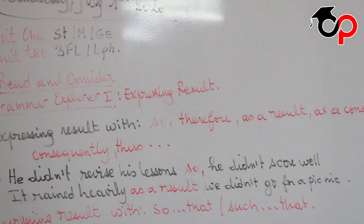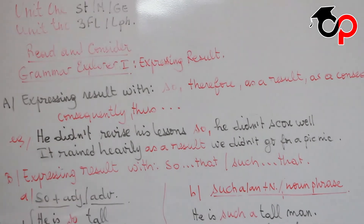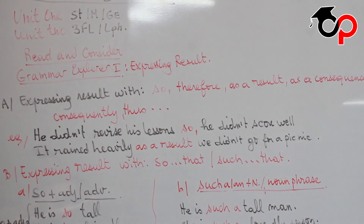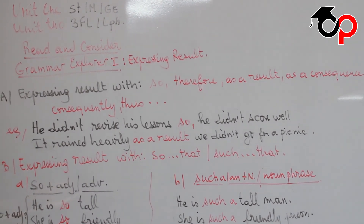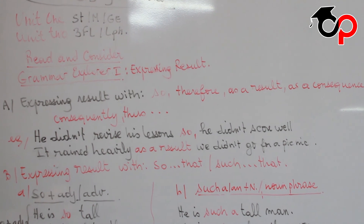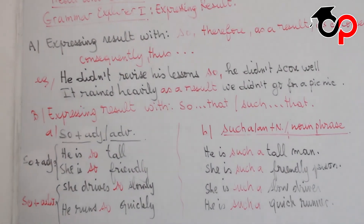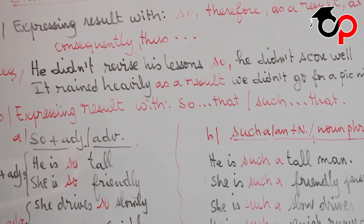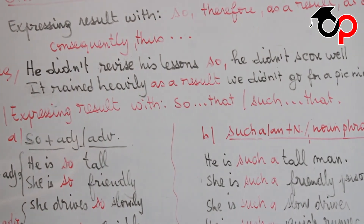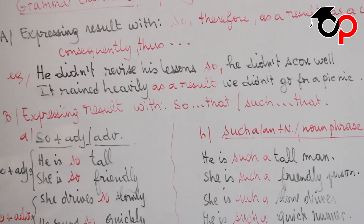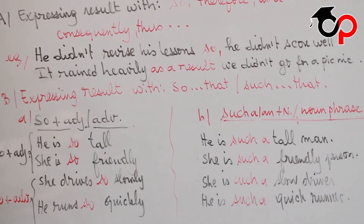Previously we have seen expressing result using so, therefore, as a result, as a consequence, consequently, thus, and so on and so forth. Example: he didn't revise his lessons, so he didn't score well. The cause is that he didn't revise his lesson; the result is he didn't score well.